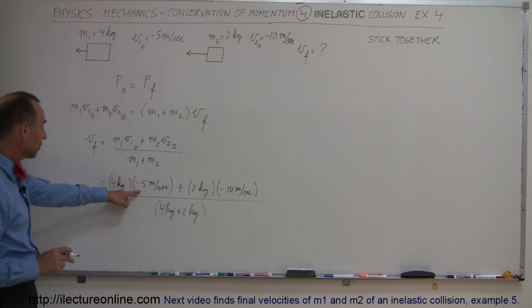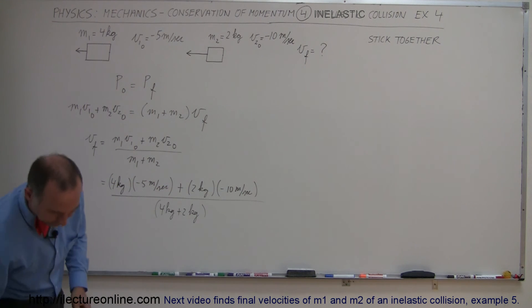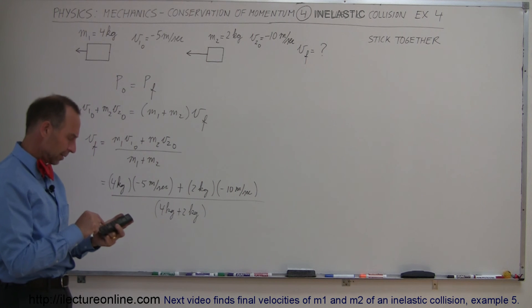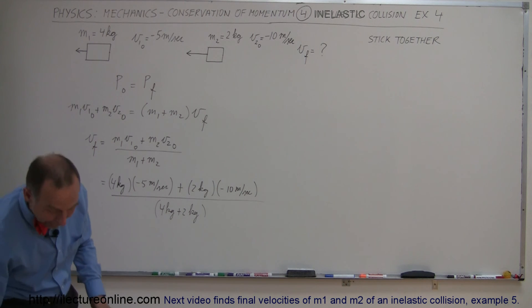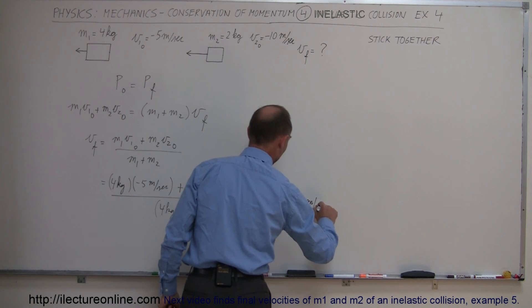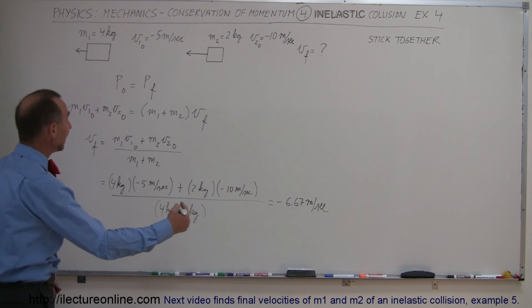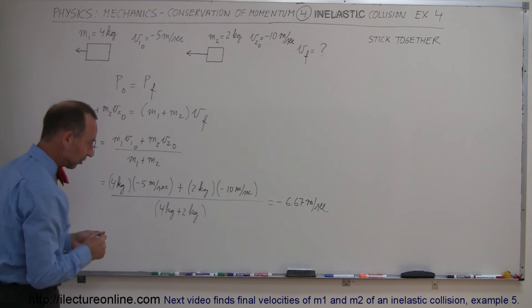All right so this gives us minus 20 minus 20 is minus 40 divided by 6 and so we end up with minus 6.67 meters per second. Minus means of course that the direction of the final velocity is to the left and the magnitude is 6.67 meters per second and that's how we do that.